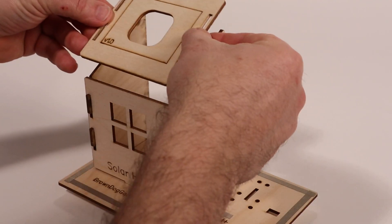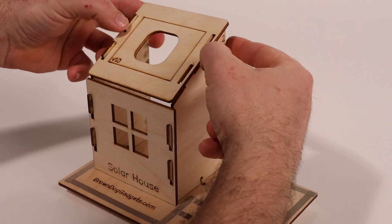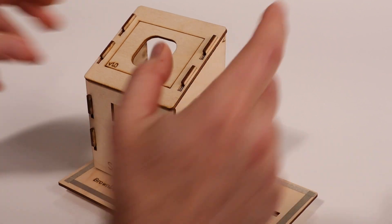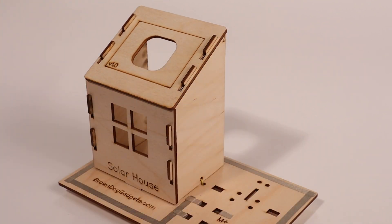Now let's add the roof. Place the four slots of the roof over the four tabs of the wall and slide it down to lock it in place. This will overhang the front of the house and hold it in place as well.